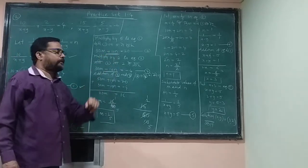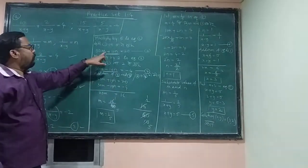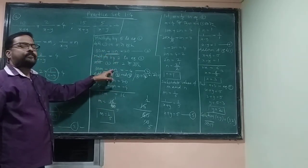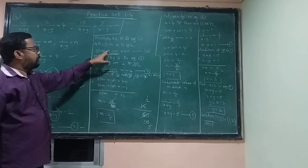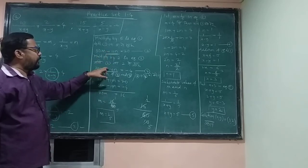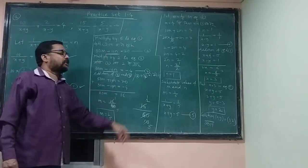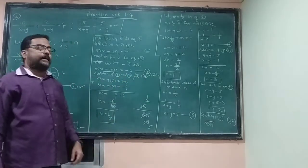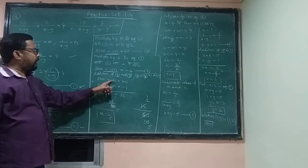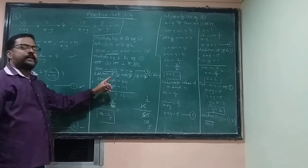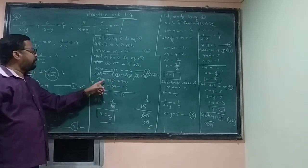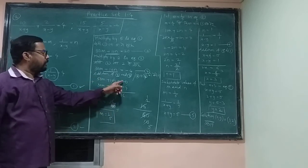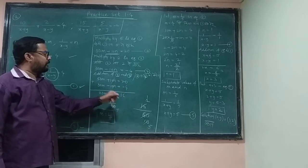We can see now there is plus 10n and minus 10n — they are opposite signs, so we add equations 3 and 4. Plus ten and minus ten cancel out. The remaining terms: 50m plus 30m equals 80m, and 20 plus 4 gives us 16 on the right side.